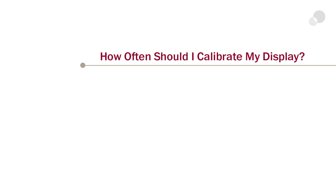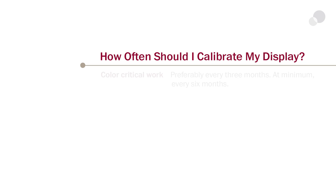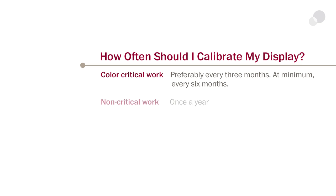Another thing people ask us is, how often should I calibrate? The important thing to remember here is that your display is going to drift over time due to aging — that's the nature of electronics. If you're doing color-critical work, at minimum every six months you should recalibrate, preferably every three months. And no matter who you are, definitely do it at least once a year.